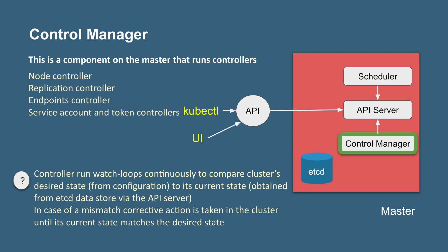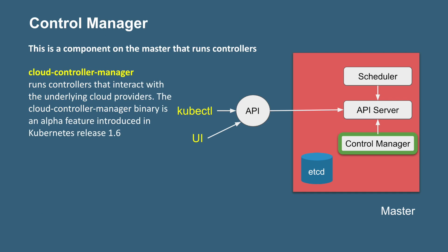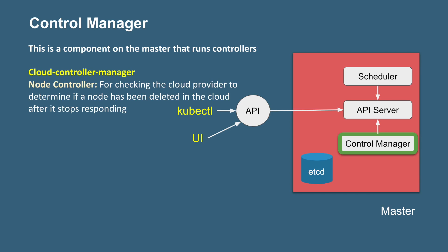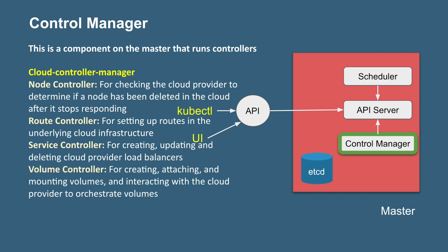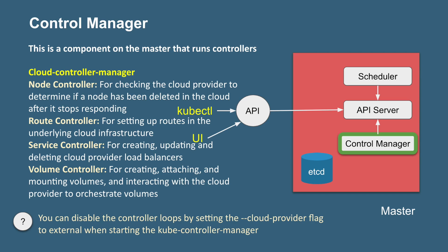All these controllers run monitors in loops to take care of the health of the cluster and the desired configuration. Whenever there is a mismatch or something is not as per the configurations, they send signals or take necessary action to the required component. The cloud controller manager also has node controller, route controller, service controller, and volume controller, all responsible for managing interaction with the cloud service provider. To disable the controller loops, you can set the cloud provider flag.